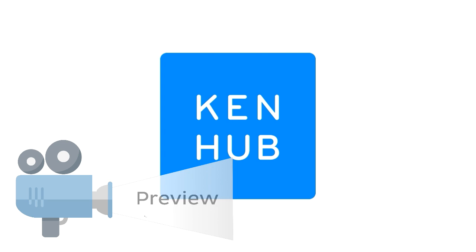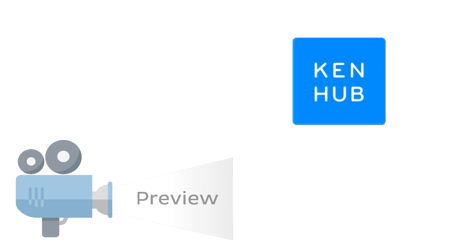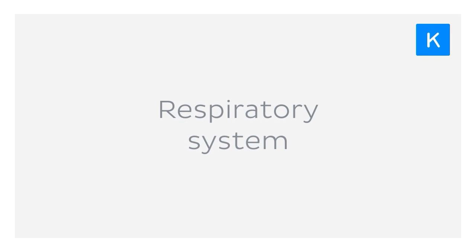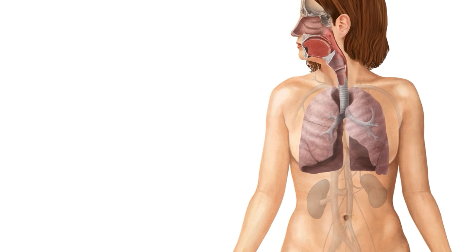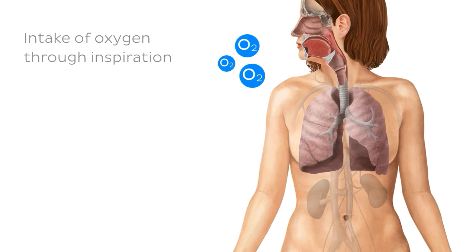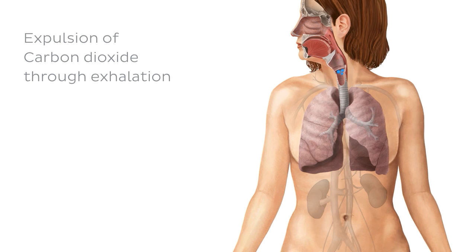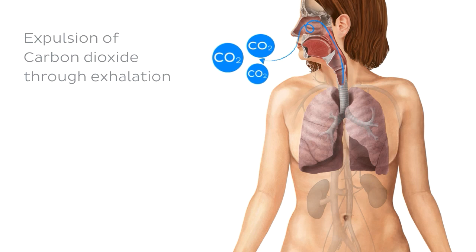Hey everyone, this is Nicole from KenHub and in this tutorial we're going to be looking at the organs of the respiratory system. The respiratory system is comprised of several organs that facilitate the intake of oxygen, which is needed for tissue function, and also the expulsion of carbon dioxide, which is a byproduct of respiration through exhalation. In this tutorial we'll discuss the organs that make up the respiratory system and their function.